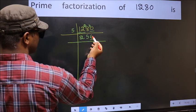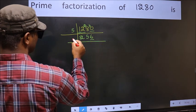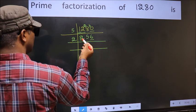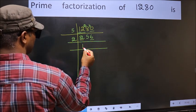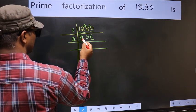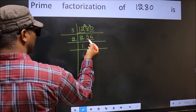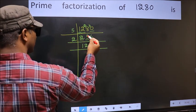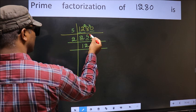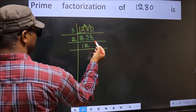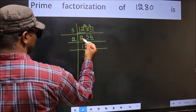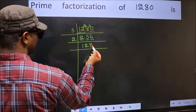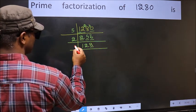Now here the last digit is 6, A1. So take 2. First number is 2. When do we get 2 in the 2 table? 2×1=2. The other number is 5. A number close to 5 in the 2 table is 2×2=4. 5 minus 4 is 1, carried forward: 16. When do we get 16 in the 2 table? 2×8=16. Now here the last digit is 8, A1. So take 2.